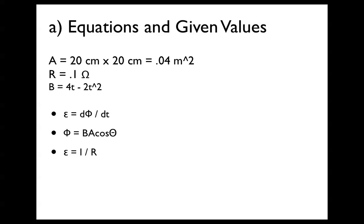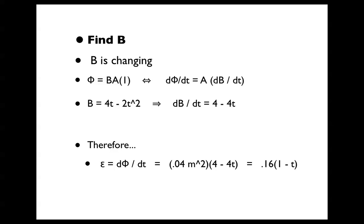The equations that we're going to use are these three right here. Voltage equals d phi over dt, and phi equals B field times area times cosine theta, and voltage equals current times resistance.